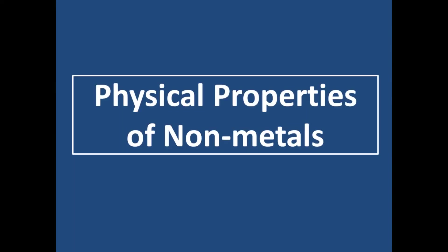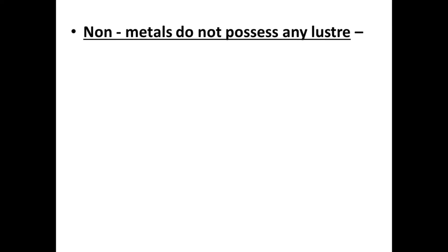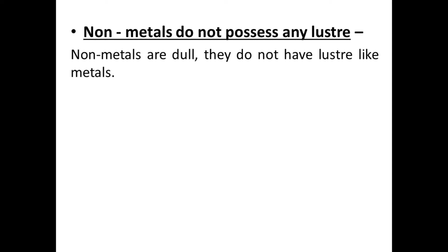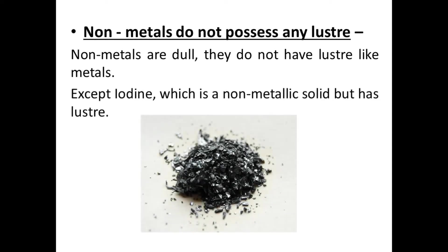Now we will discuss the physical properties of non-metals. First: non-metals do not possess any lustre — non-metals are dull and do not have lustre like metals. Exception is iodine — iodine is the only non-metallic solid which has lustre; it can shine like a metal.